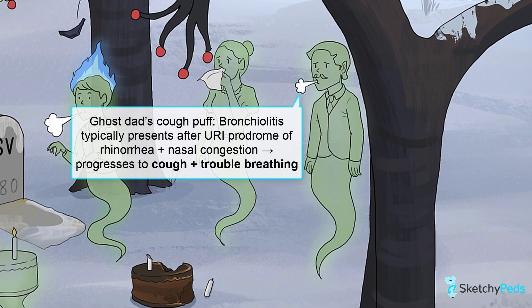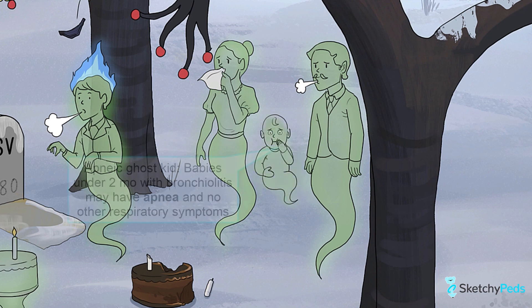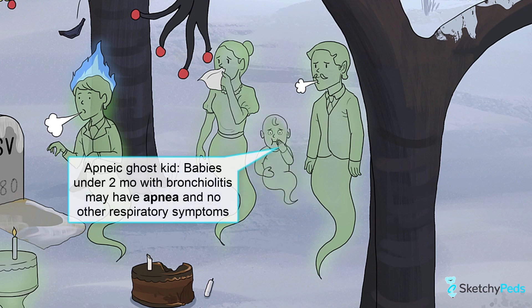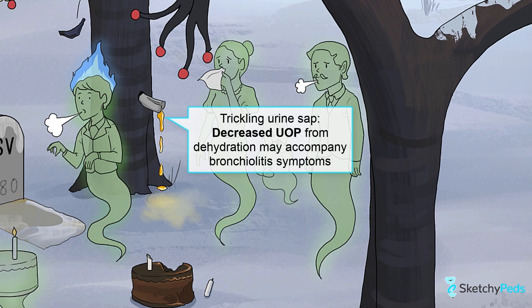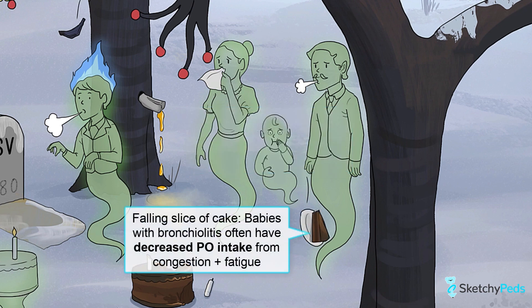These nasal symptoms typically last for a couple days, followed by the onset of cough and trouble breathing. Infants less than two months of age may present with apnea alone and no other bronchiolitis symptoms, shown here by this apneic ghost baby. Parents may also report that their child is making fewer wet diapers than usual — this trickling sap and puddle of yellow snow should help remind you of this. This can be a sign of dehydration related to insensible losses from increased respiratory effort and/or decreased PO intake secondary to nasal congestion or reduced energy.